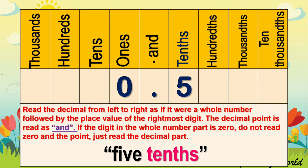What about this kind of number? As you can see, we only have 0 in the whole number part, or on the left side of the decimal point. If this is the case, we do not read the 0 and we do not read the point as 'and.' We go directly to the decimal places. So this decimal number is read as 5 tenths. Again, 5 tenths.